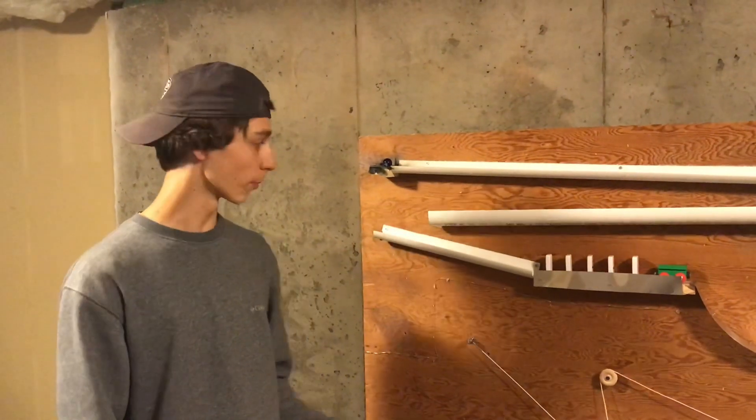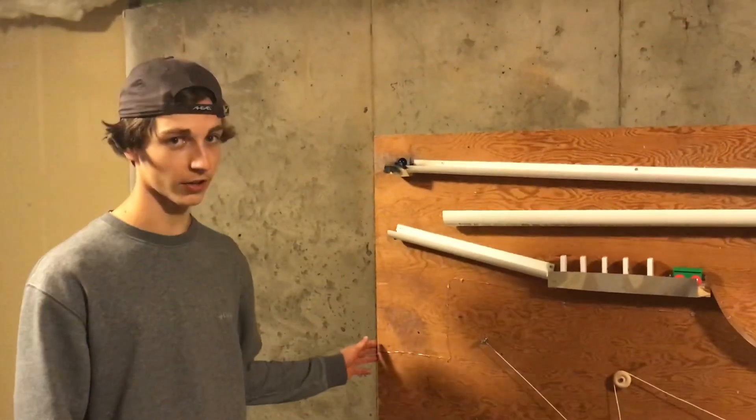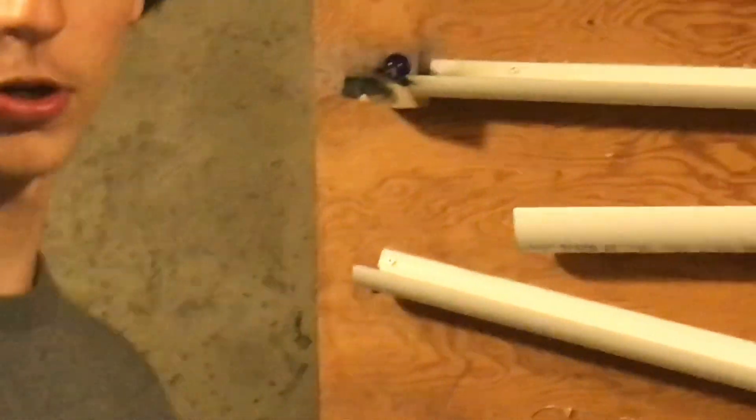This is my 10-step Rube Goldberg machine that turns on LED lights. I'll walk you through that.